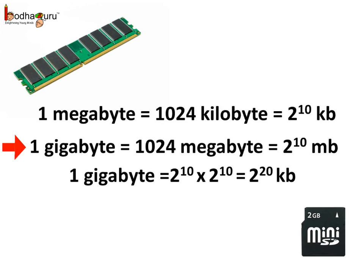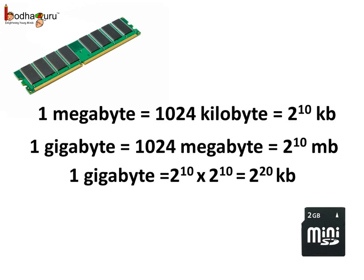So, 1 gigabyte has 2 to the power 10 MB. That is, 2 to the power 10 plus 10, that is, 2 to the power 20 KB.